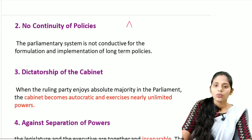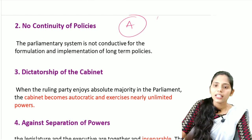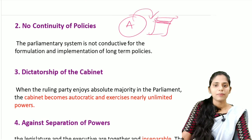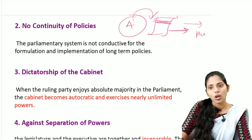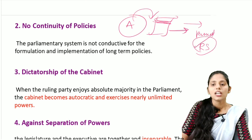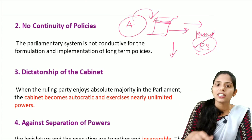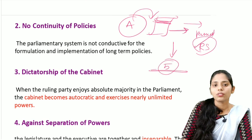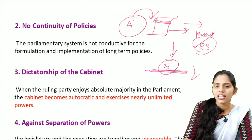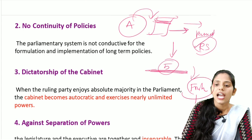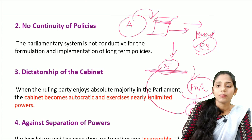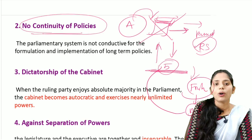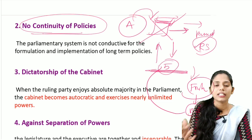The next demerit is no continuity of policies. For example, Party A comes into power and wants to pass a bill. The bill is opposed in Rajya Sabha and keeps failing. When the five-year tenure completes, the house is dissolved and fresh elections are held. If Party B comes to power, they may not be interested in this bill, so it may never be passed. In this way, we cannot ensure policy continuity because of the change of government every five years.